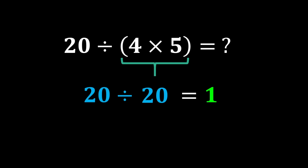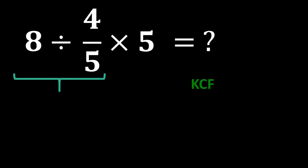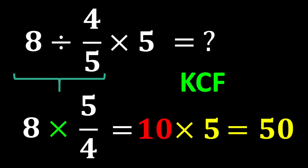Now let's go back to the question at the beginning of the video: 8 divided by (4 over 5) times 5. According to PEMDAS, multiplication and division have equal priority, so we move from left to right and first reach 8 divided by (4 over 5). To solve this, we use the KCF rule: K stands for keep, C stands for change, and F stands for flip — keep the first number, change the division sign to multiplication, and flip the second number (take its reciprocal). So 8 divided by (4 over 5) becomes 8 times (5 over 4): 8 times 5 becomes 40, and 40 divided by 4 becomes 10. Finally, 10 times 5 becomes 50, so our final answer is 50.